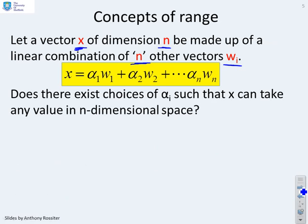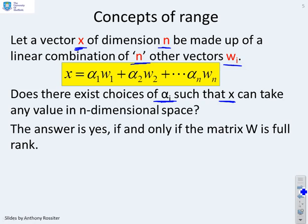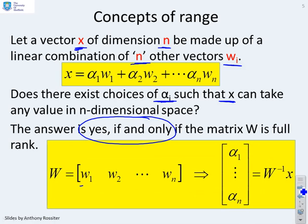The question you need to ask: does there exist choices of αᵢ such that x can be any value I like in an n-dimensional space? Well, the answer to this is yes, if and only if the matrix W is full rank, where the matrix W is defined from these corresponding vectors w₁ to wₙ. And assuming W is full rank, then you can always solve for the alphas using a formula a bit like this.